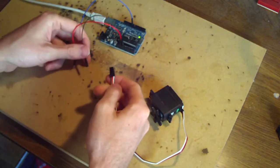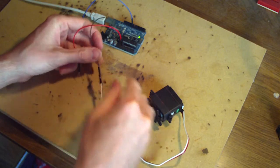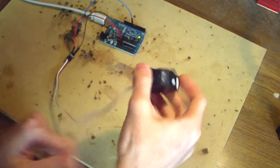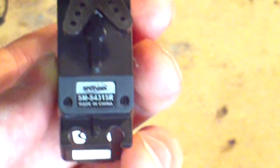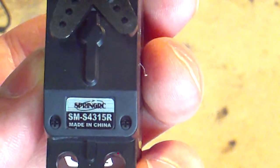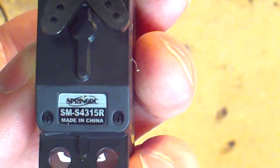So, I will just briefly plug in the negative here. And I will show you the model number on this one. So, this is an SM-S4315R. Okay?